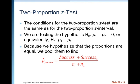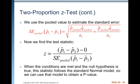The two conditions for the two proportion Z tests are the same as for the two proportion Z interval. We are testing the hypotheses H naught: P1 minus P2 equals 0, or equivalently H naught: P1 equals P2. Because we hypothesize that the proportions are equal, we pool them to find the P hat pooled. We use the pooled value to estimate the standard error.